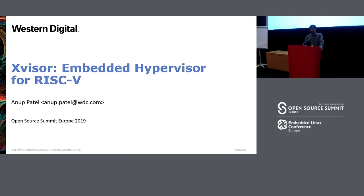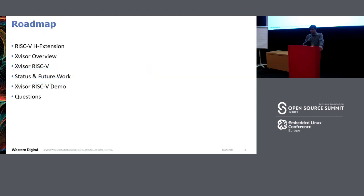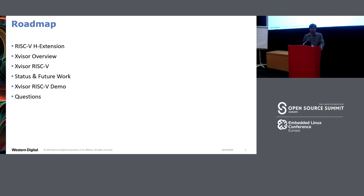RISC-V is quite suited for the embedded world, and having an embedded hypervisor for the RISC-V world would be great. This is a rough outline of the talk: a quick overview of the RISC-V H extension, what is there in RISC-V for supporting hypervisors, then X-Visor in general, the RISC-V port, current status, future plans, and if time permits, a quick demo of RISC-V running on QEMU.